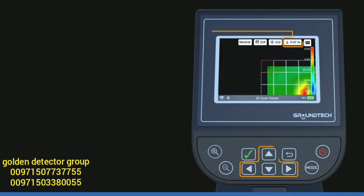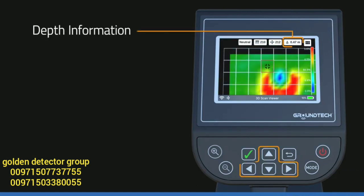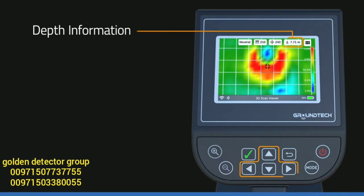After you select the type of soil, you will see depth information for each point on the top bar as you go around the graph with direction buttons.